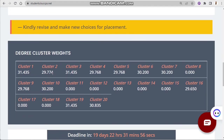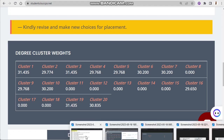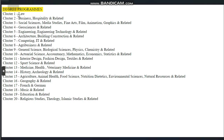Courses are grouped into clusters from cluster 1 to 20. For example, cluster one has law-related courses, cluster two has business-related courses and hospitality. So let's say commerce, economics — these fall under cluster two. Another example: cluster 13 is medicine and health, so any medical-related course falls under cluster 13.